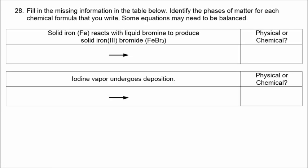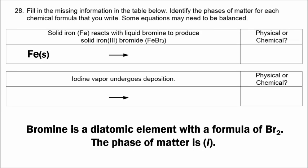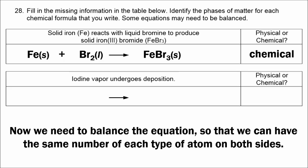In the last chemical change example, solid iron reacts with liquid bromine to produce solid iron bromide. Iron is not diatomic, so it's written as Fe and is a solid. Bromine is diatomic, written as Br2, and is a liquid. The product is FeBr3 in the solid phase. To balance, we put a 3 in front of Br2 giving 6 bromines on the left, then a 2 in front of FeBr3 giving 6 bromines on the right, and finally a 2 in front of Fe. The equation is balanced.